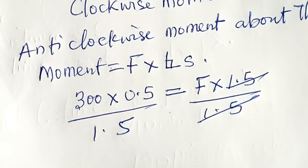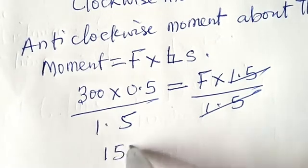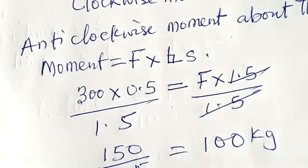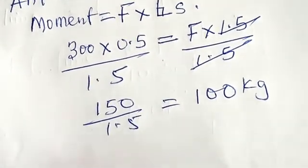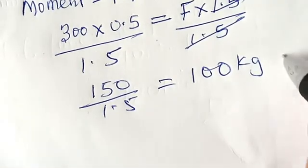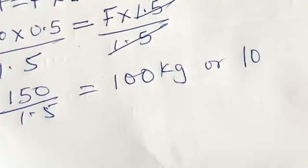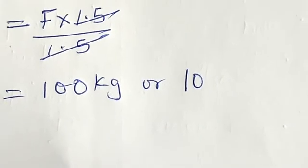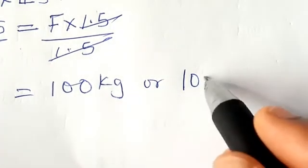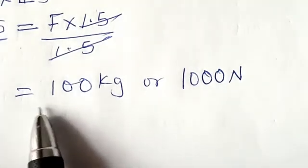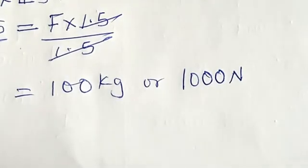150 divided by 1.5 gives us 100 kilograms. If I want to convert it to force, which it is, I will multiply it by 10. Remember the formula: weight equals mass times acceleration due to gravity. I'm going to have 1000 Newtons as my force, and that is the answer to this problem.